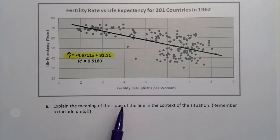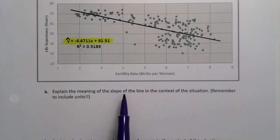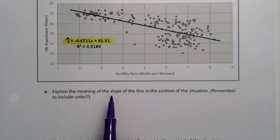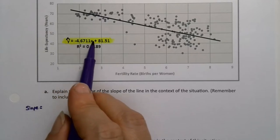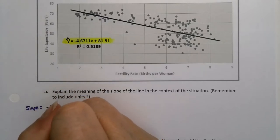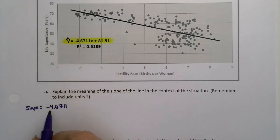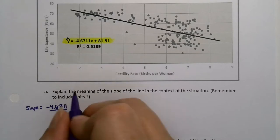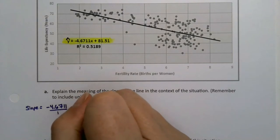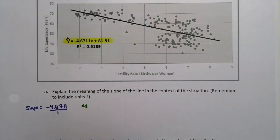So the slope. First of all, what is the slope? I mean, it's hard to interpret something that we don't know what it is. So the slope is a, which is the number that's multiplied by the x, so it's negative 4.6711. Now, if you'd like, you can think of that as negative 4.6711 over 1, because this is the change in y.